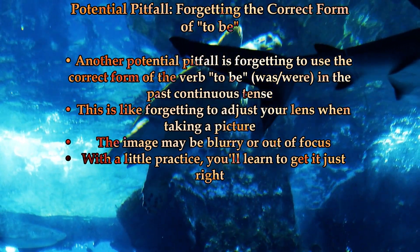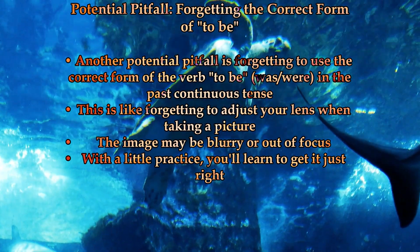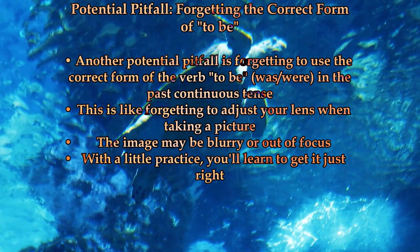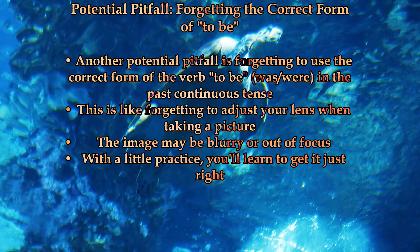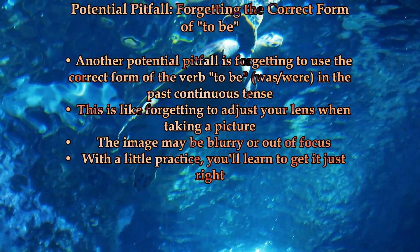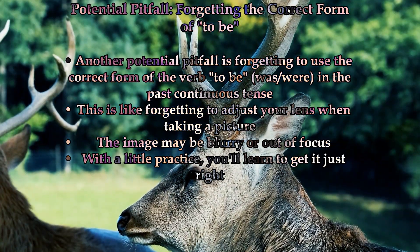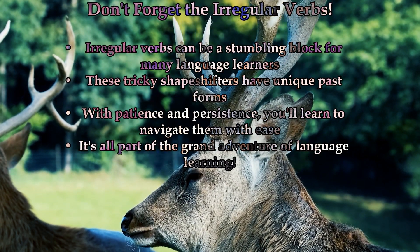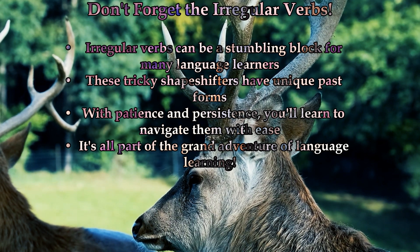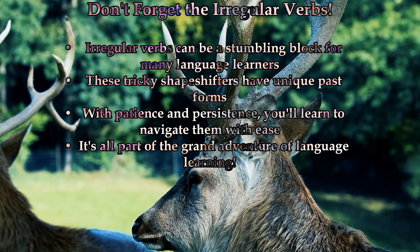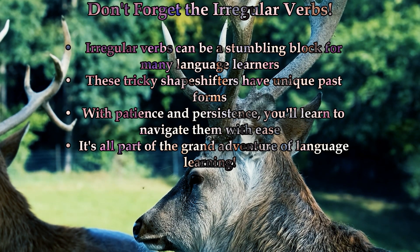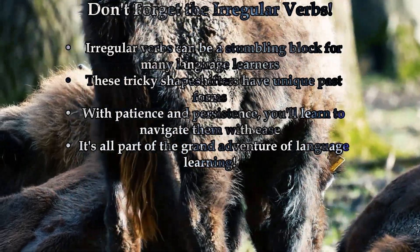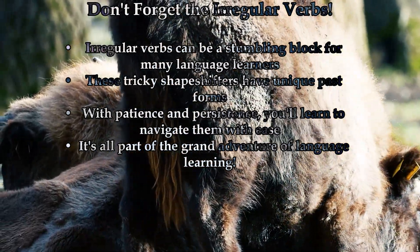Another potential pitfall is forgetting to use the correct form of the verb 'to be' — 'was' or 'were' — in the past continuous tense. This is like forgetting to adjust your lens when taking a picture: the image may be blurry or out of focus, but with a little practice, you'll learn to get it just right. And let's not forget the irregular verbs — these tricky shapeshifters can be a stumbling block for many language learners, but with patience and persistence, you'll learn to navigate their unique past forms with ease.